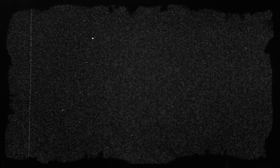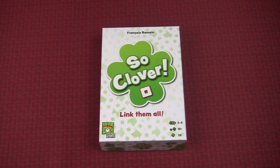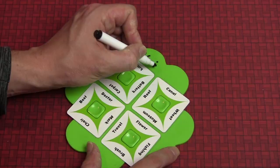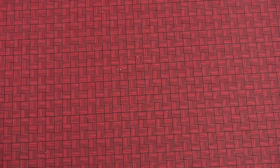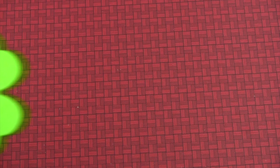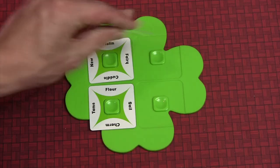So Clover is a cooperative word game that asks players to create single word clues that will lead their team to place square cards correctly in a two-by-two grid, earning points for the team. Each player gets a clover board and dry erase marker, and draws four cards from the deck. These cards are randomly placed in the slots on the clover board, keeping them secret from the other players.